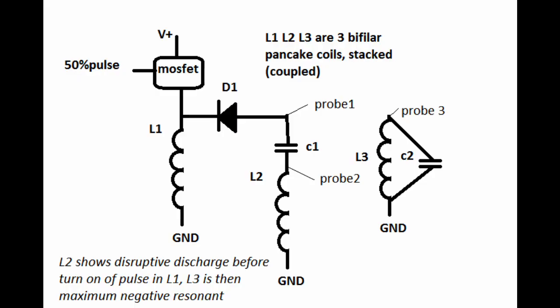Here you see the schematic. The inductive spike travels via diode 1 to C1 and L2. If you think you know the answer — why is this happening right at that moment in time? — please share it, because it's vital information.